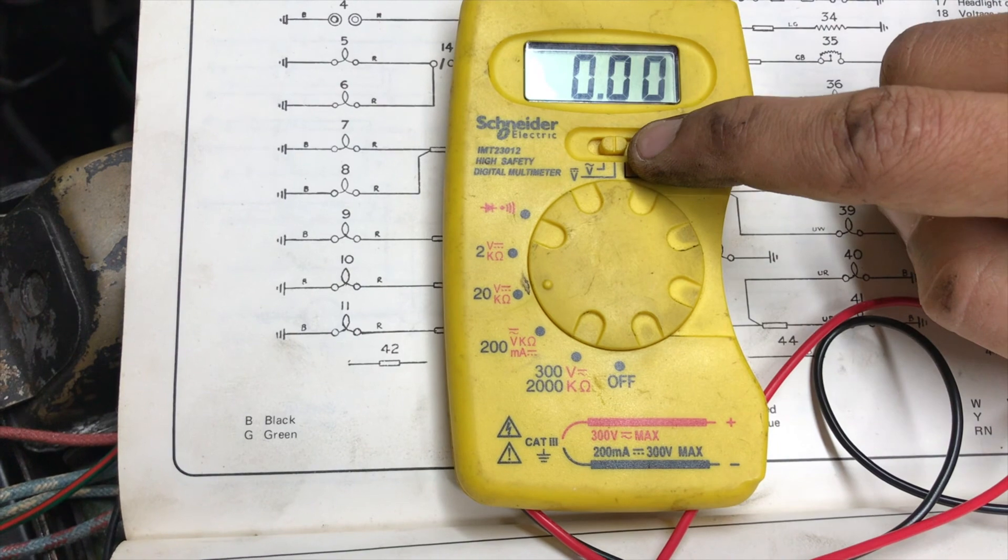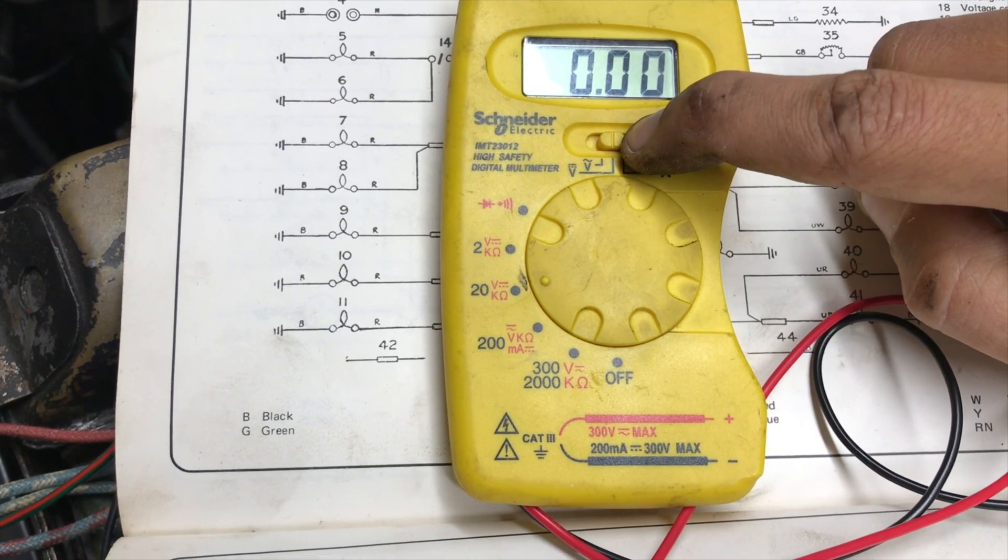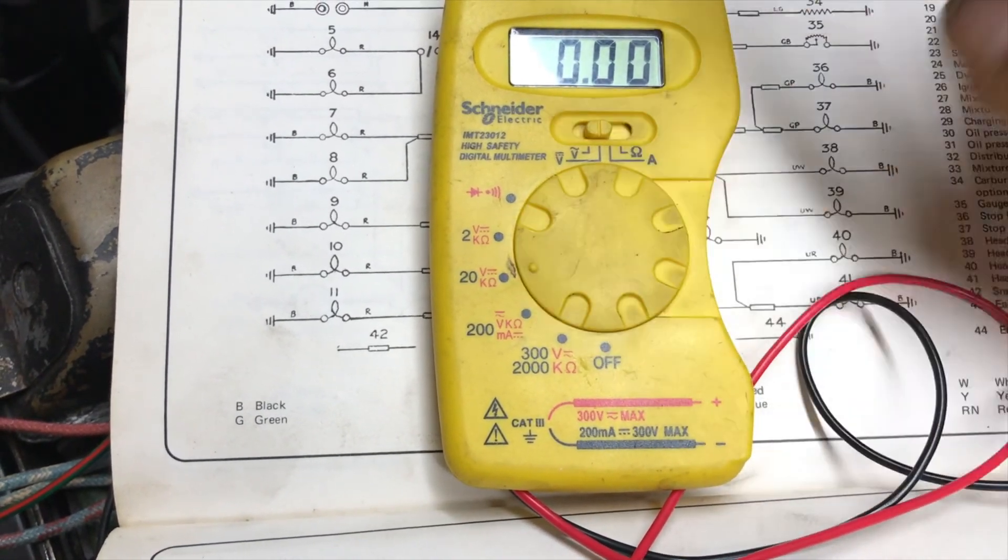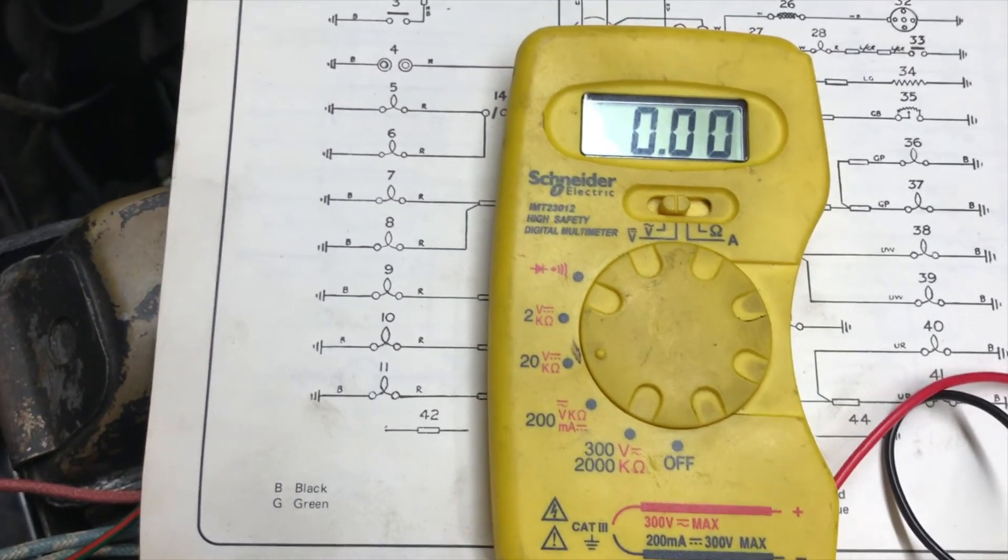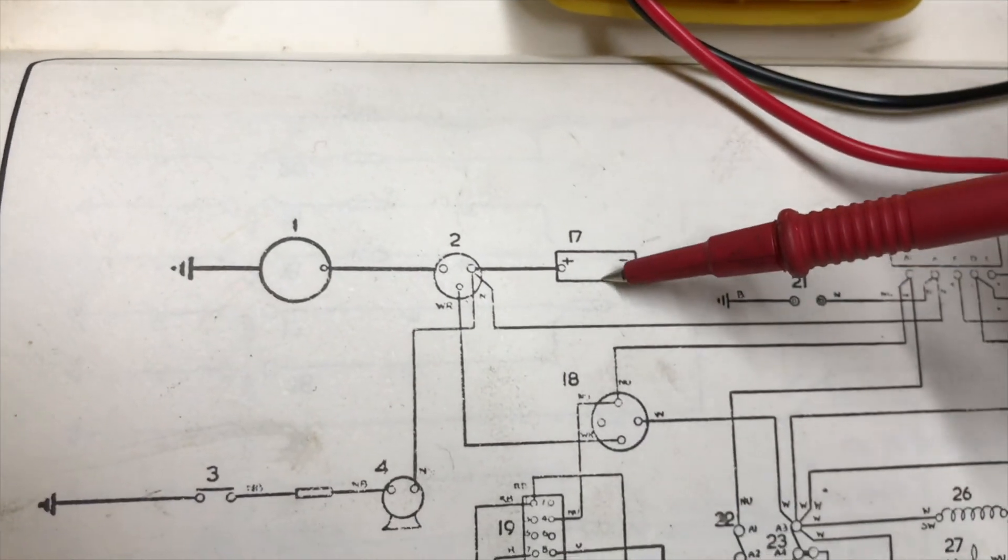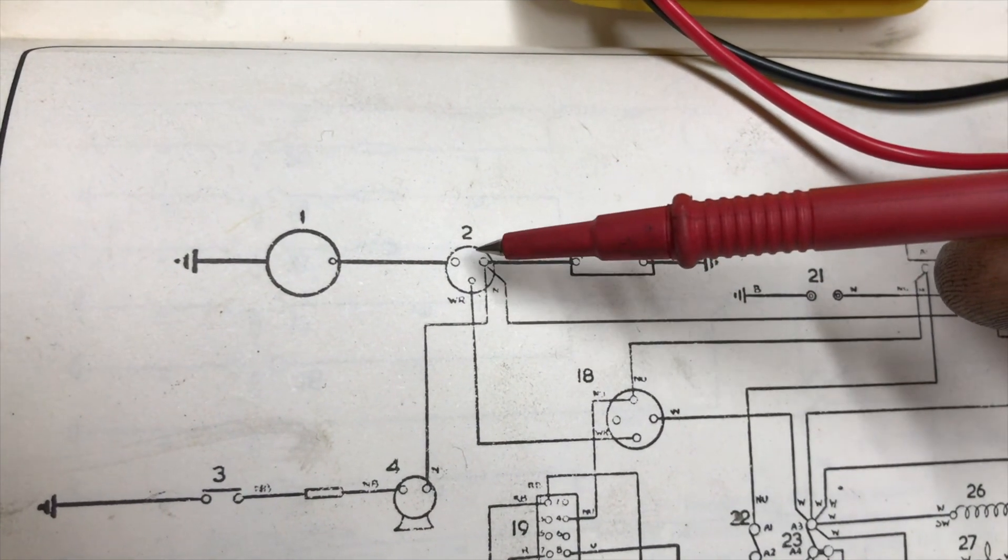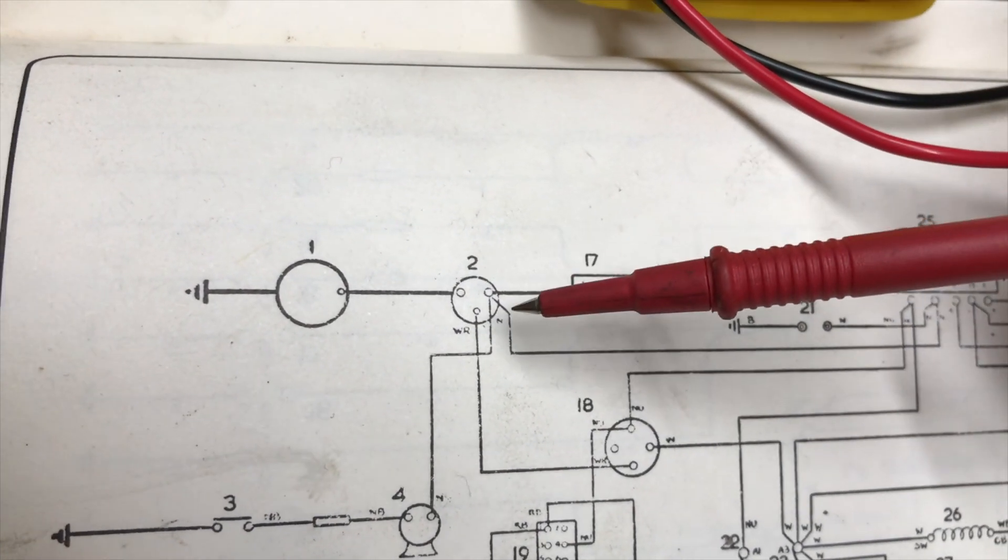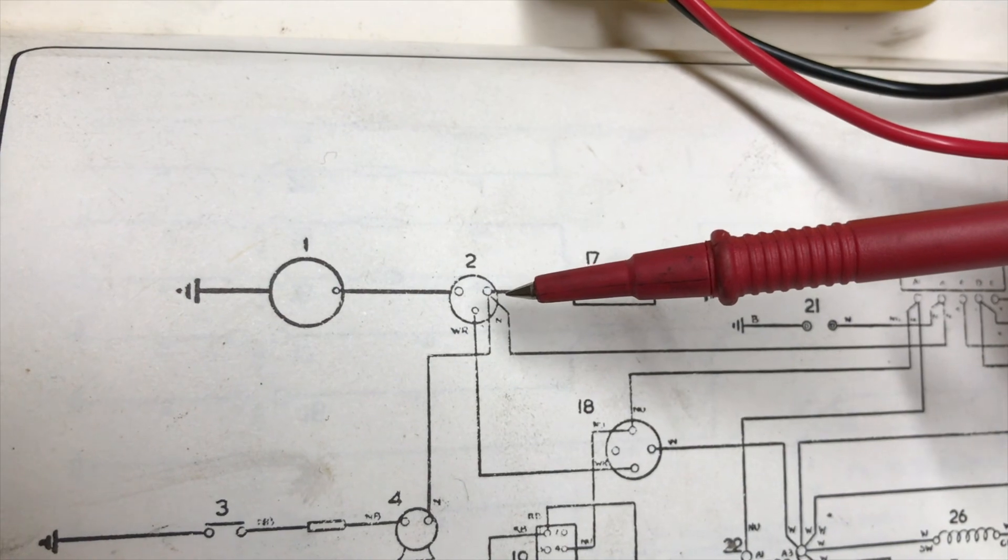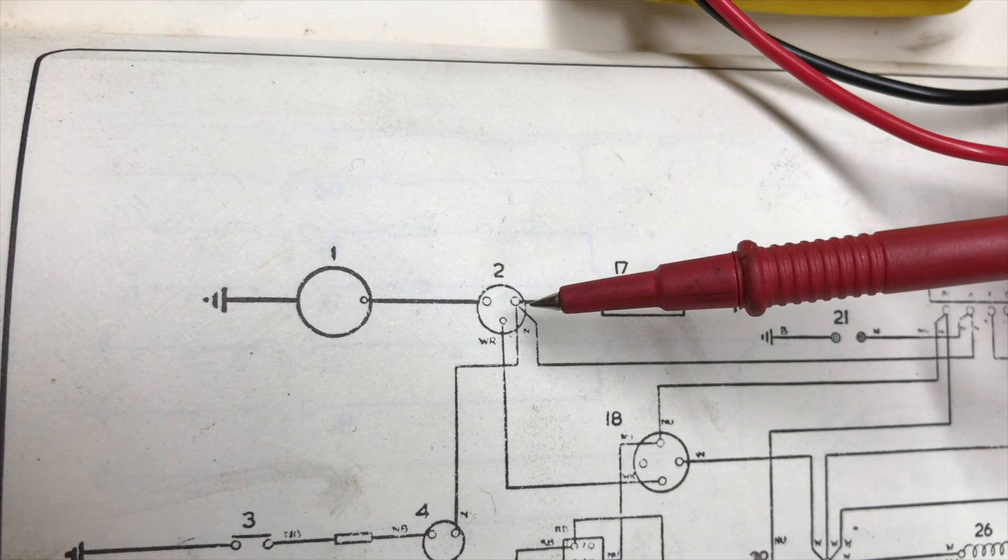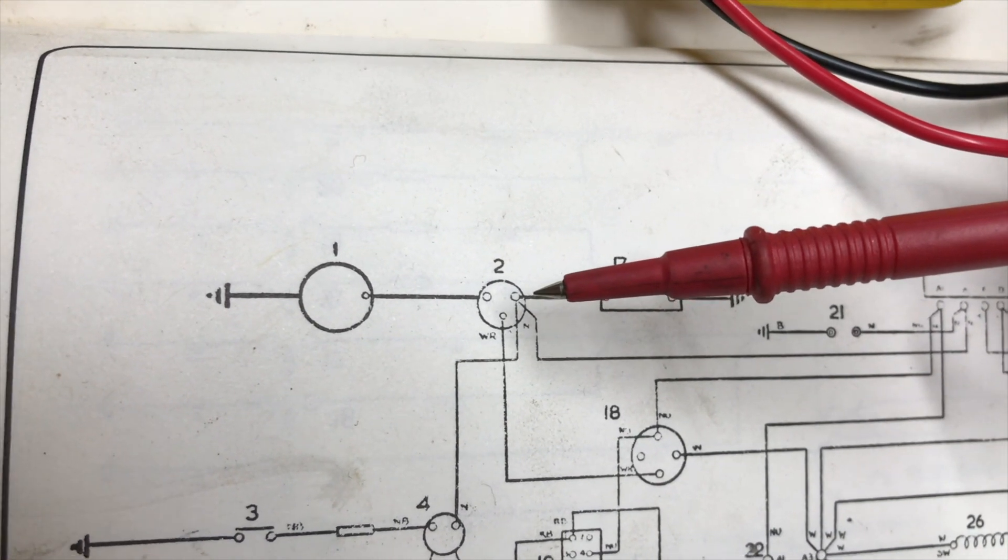So, with this multimeter, I switch it to direct current, because we're working with 12 volt DC. And I set the range to 20 range, which is 2 to 20, where 12 volt sits. And then I can measure actual voltages. So I measured the voltage across the battery. That's where the power starts. And that was fine. Next, the power goes to the starter solenoid. Then I measured the voltage across different points on the starter solenoid, back to the earth terminal and the battery. And it had 12 volts there as well.